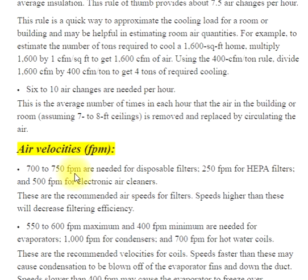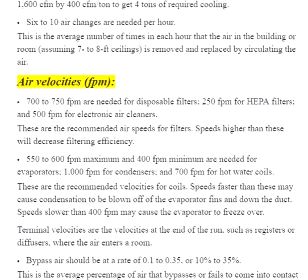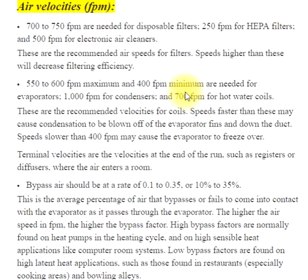Air velocities in FPM: 700 to 750 FPM are needed for disposable filters, 250 FPM for HEPA filters, and 500 FPM for electronic air cleaners. These are the recommended air speeds for filters. Speeds higher than these will decrease filtering efficiency.